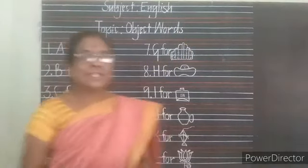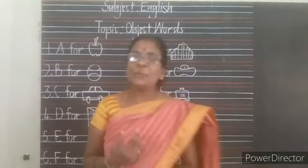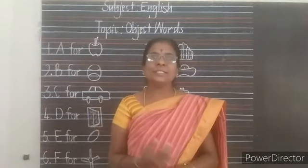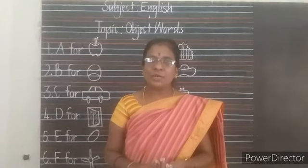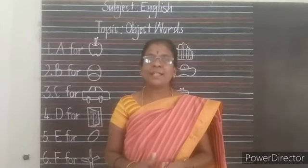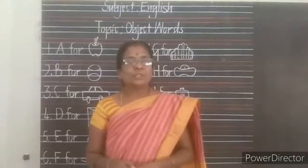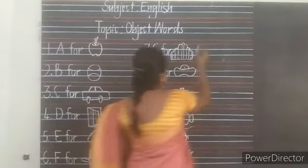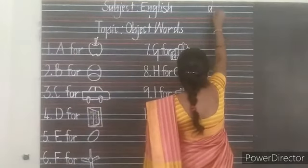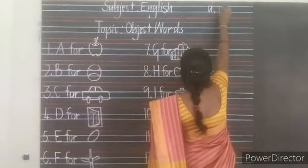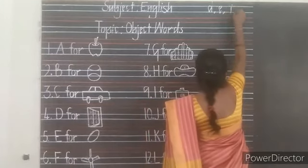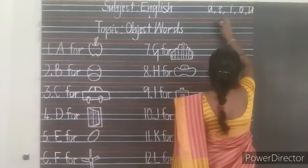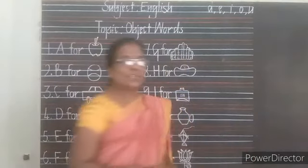Before that, let's recall what you have learnt in the previous class. In the previous class, we have learnt capital letters, small letters and vowels. Which are those five vowels, children? A, E, I, O and U. These are the five vowels.